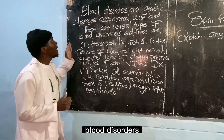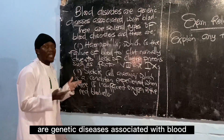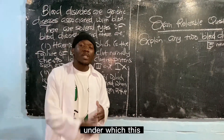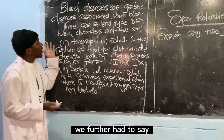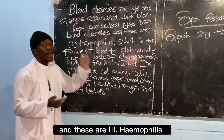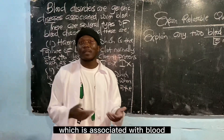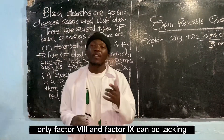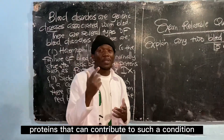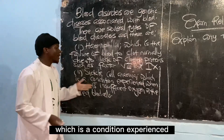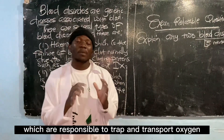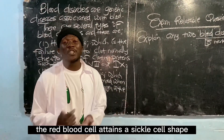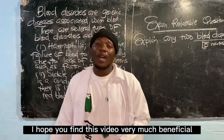Having done that, we are in line with the expectations of the marker. It goes: blood disorders are genetic diseases associated with blood. We further say there are several types of blood disorders — one: hemophilia, a genetic disease associated with the failure of blood to clot normally, where clotting proteins such as factor eight and factor nine are lacking. Two: sickle cell anemia, a condition experienced in the red blood cells which are responsible for trapping and transporting oxygen; if there is insufficient oxygen, the red blood cell attains a sickle cell shape.